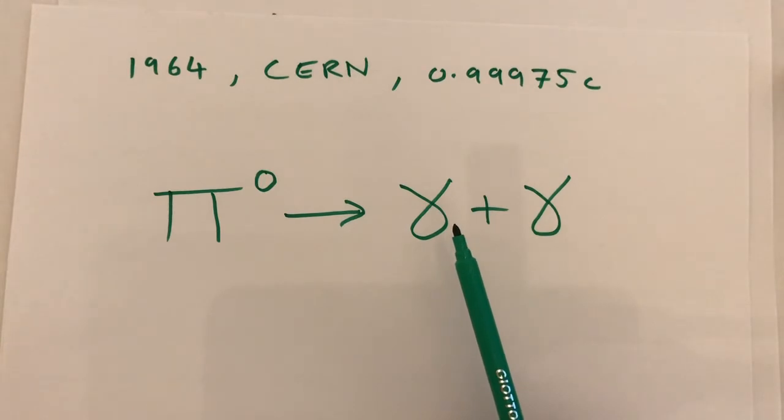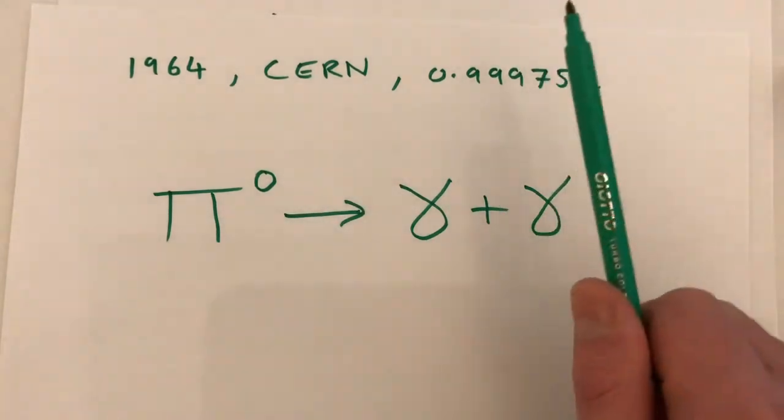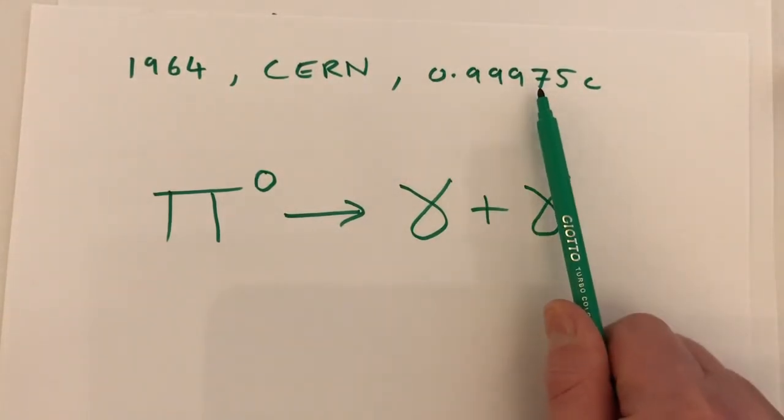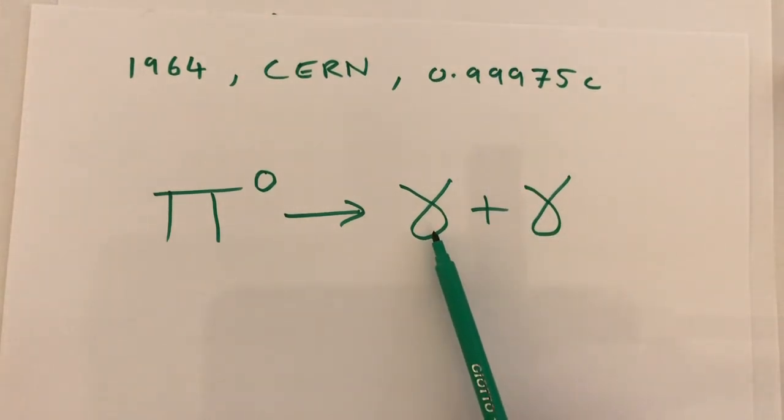They found that the speeds of the light emitted by the pions was the same as would have been measured if the pions had been at rest in the laboratory. Even when the pion is moving forwards with a speed very close to the speed of light and shoots one of its gamma rays out forwards and one backwards, both of these have exactly the same speed as measured by the moving pion and the laboratory itself.